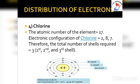For chlorine, the atomic number is 17, so 17 electrons are present. Its electronic configuration is 2, 8, 7 — meaning 2 electrons in the K shell, 8 electrons in the L shell, and 7 electrons in the M shell, which is the outermost shell. So chlorine requires a total of 3 shells.